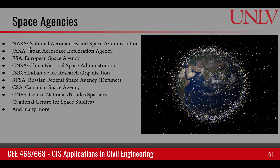These agencies include NASA — the National Aeronautics and Space Administration in the U.S. Japan has JAXA, the European Union has ESA, China has CNSA, and India has ISRO — the Indian Space Research Organization. The Russian Federal Space Agency is now defunct. There is also the Canadian Space Agency (CSA) and France's CNES, among many more. If you search for a space agencies list, you'll see that many countries, no matter how small, have their own space programs.